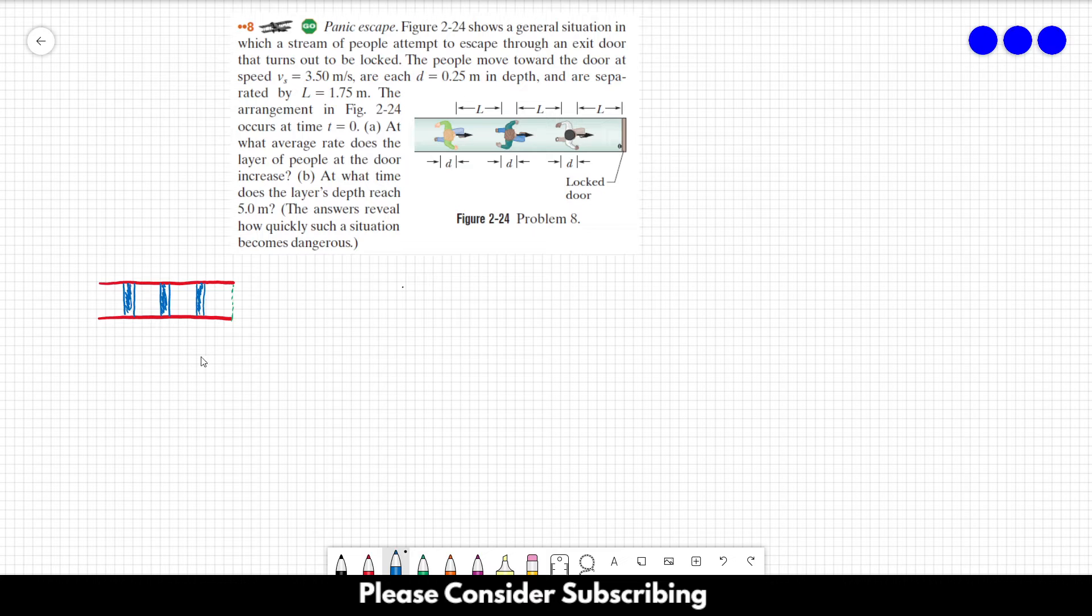This distance over here is L. This distance is L and this distance over here is D, small d.